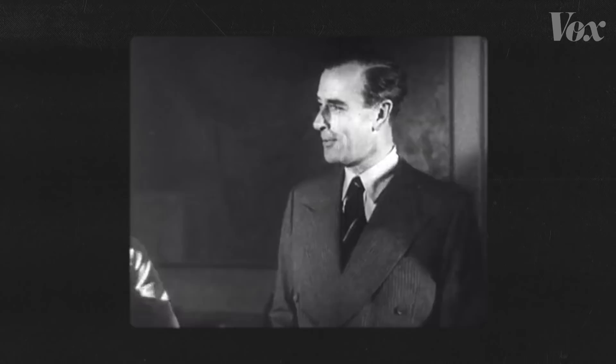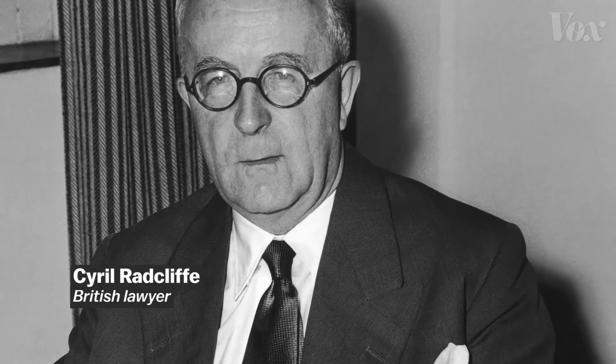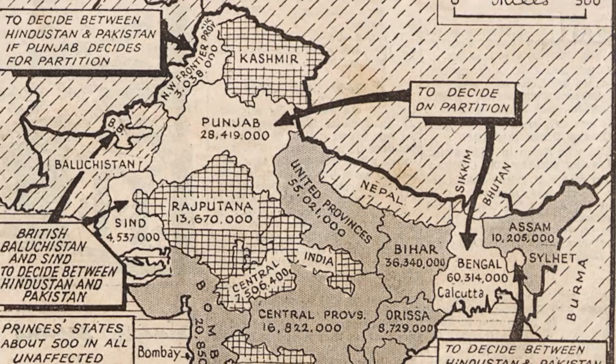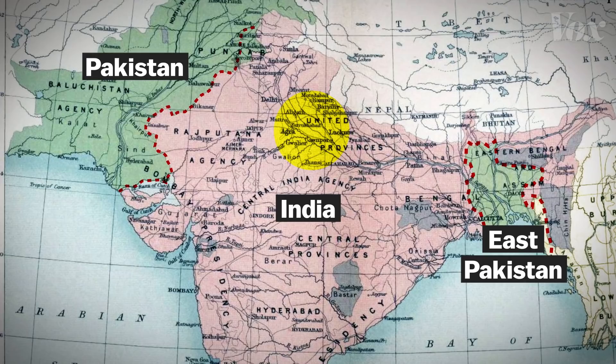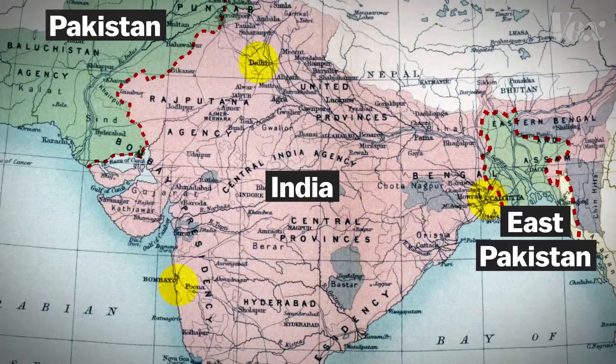Colonial India was partitioned into two separate religious states. Pakistan, with 100 million Muslims, was created as a counterpart to India, with 300 million Hindus. A British lawyer named Cyril Radcliffe, who had never been to India, was given less than 40 days to draw up the new borders based on outdated maps and census data. Radcliffe kept the region with the Muslim League's political base within India instead of Pakistan's borders, and left most economic centers like Delhi, Bombay, and Calcutta within India, leaving the future Pakistan at an economic disadvantage.